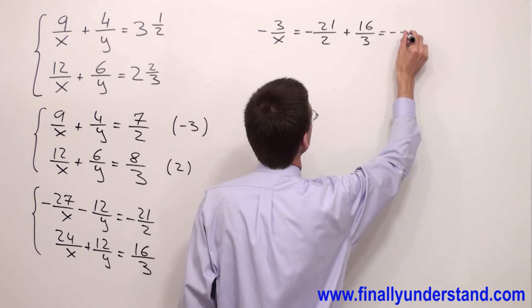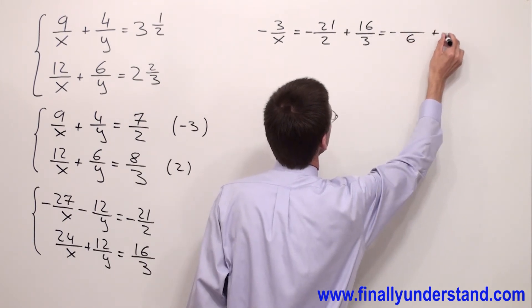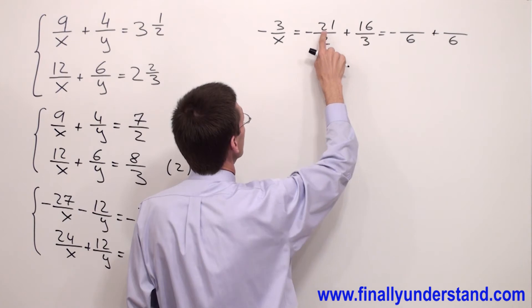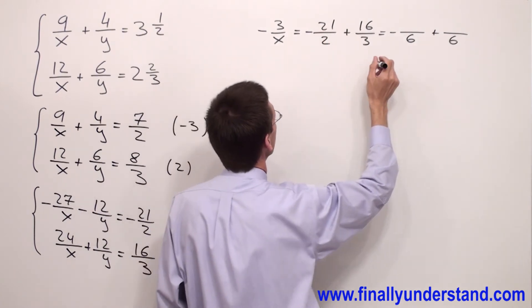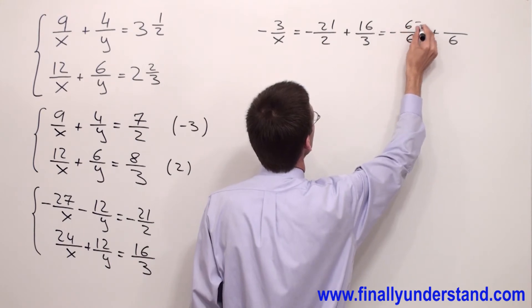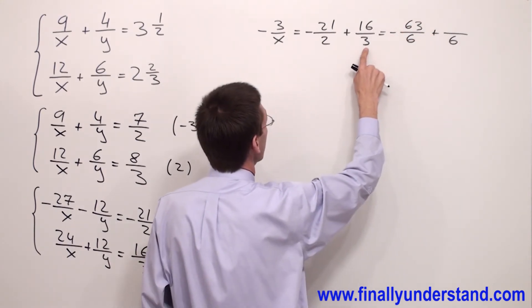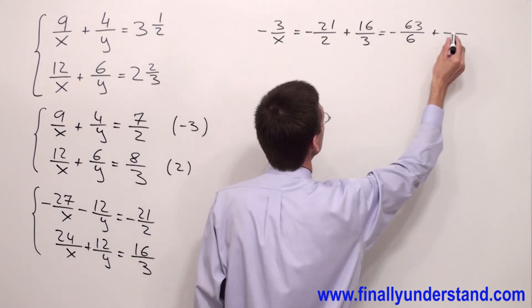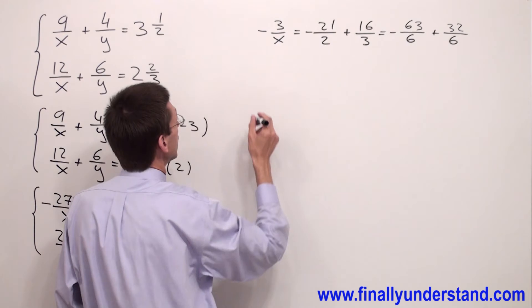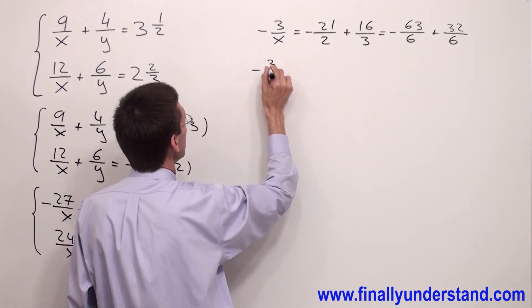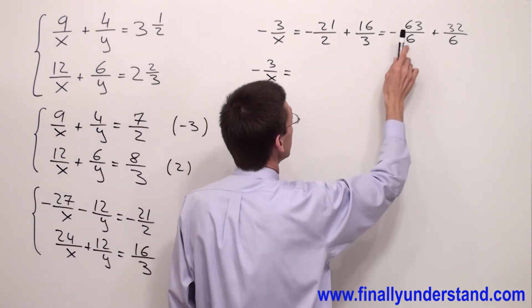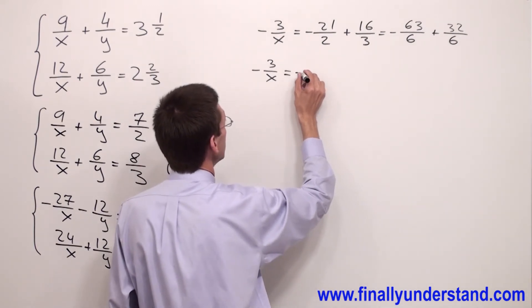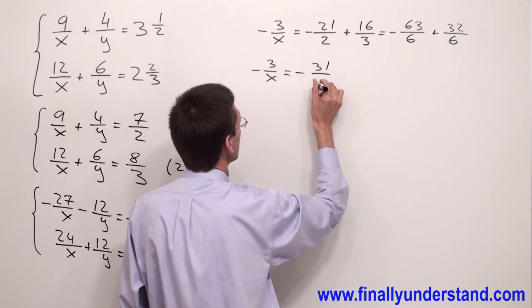So I'm going to write the fractions over 6. 2 times 3 gives me 6, so I have to multiply 21 by 3: 21 times 3 is 63. And 3 times 2 gives 6, so 16 times 2 equals 32. So we have negative 3 over x equals negative 63 plus 32 over 6, which is negative 31 over 6.